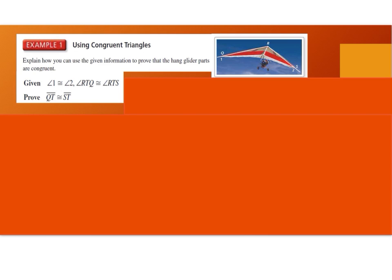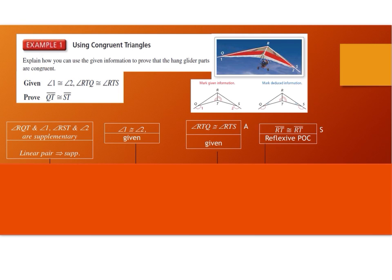Let's see how we can use corresponding parts of congruent triangles congruent to prove that side QT is congruent to side ST, as illustrated in this picture of a hang glider. Start by sketching the picture with all available markings of your givens, and then also any information that you can deduce from the picture, such as the fact that these two angles are supplementary.